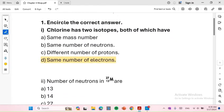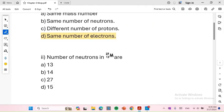Number of neutrons in M are... neutrons nikalane ke liye hum atomic mass se atomic number minus kar dete hain, to 27 minus 13 aata hai 14.